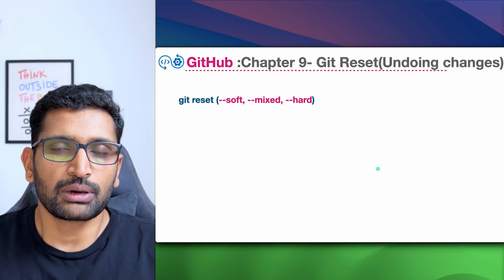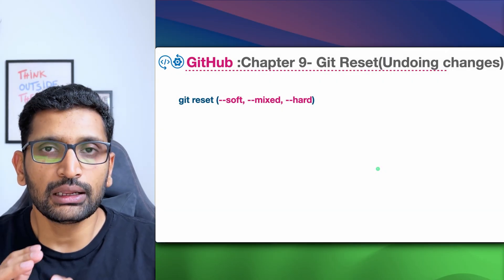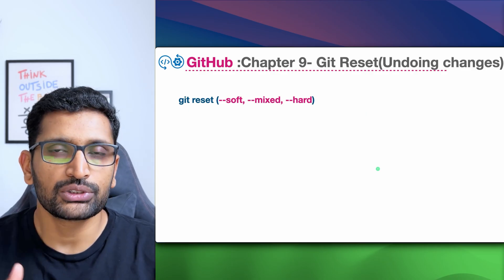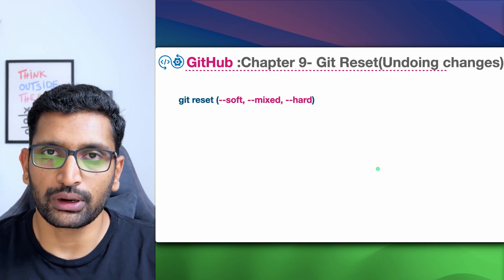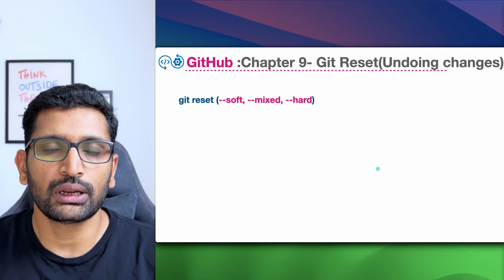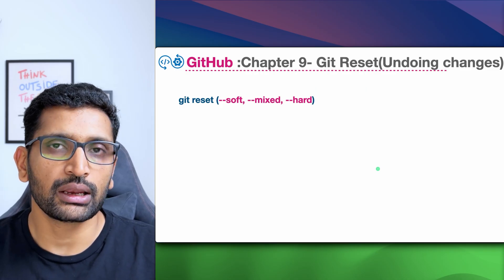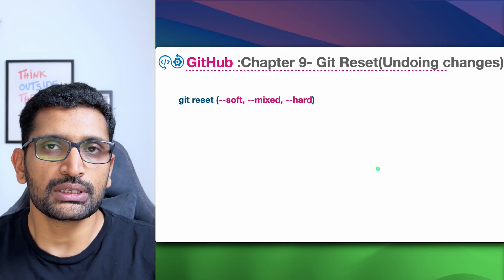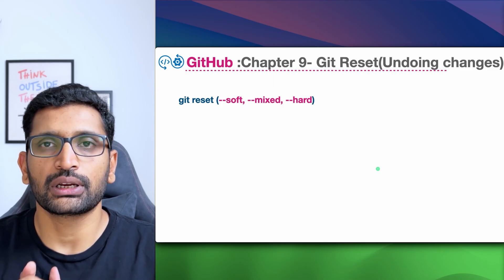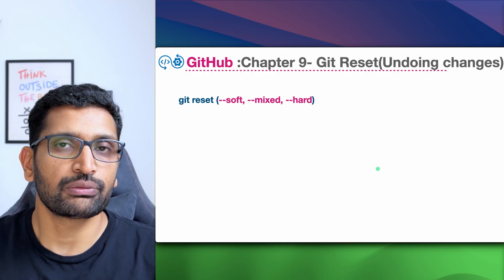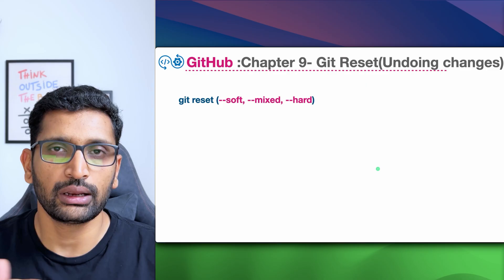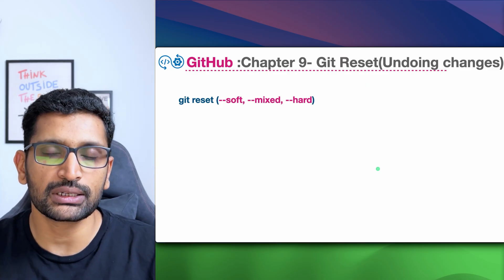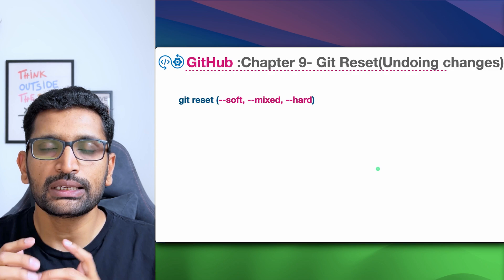Let's take a look at the next chapter, which is git reset. Until now, whatever we have learned, we were adding new files and new changes to our GitHub repository. But it happens quite often that a developer makes a mistake and wants to undo changes. To undo changes, there is a command in git called git reset, which can be used with multiple flags. There are three types: soft, mixed, and hard.